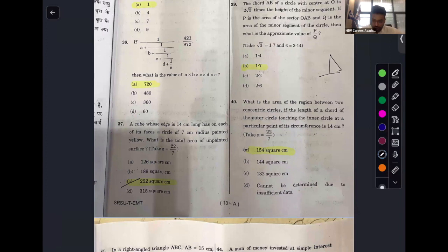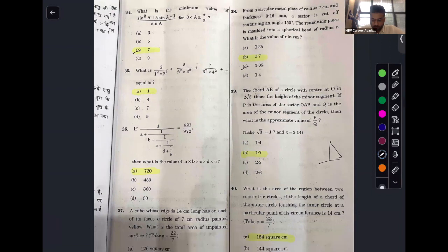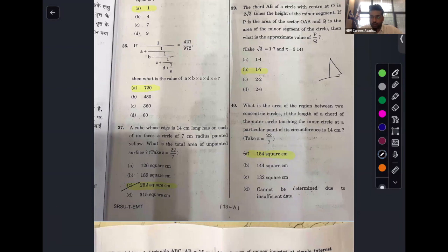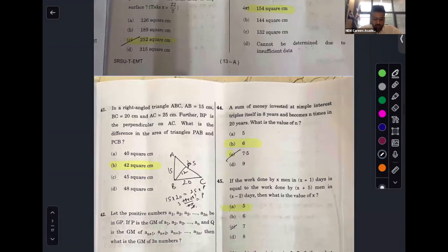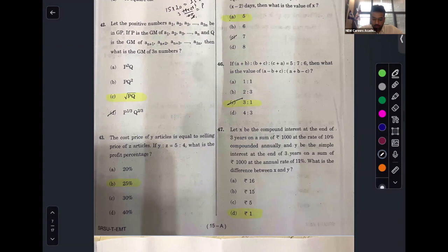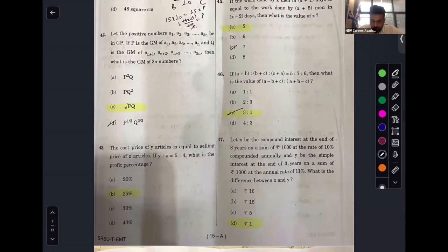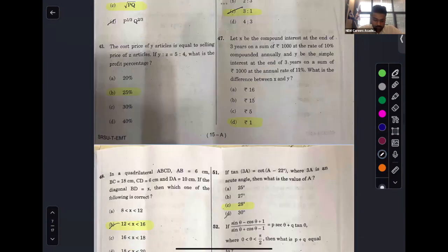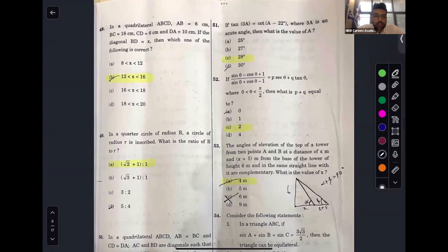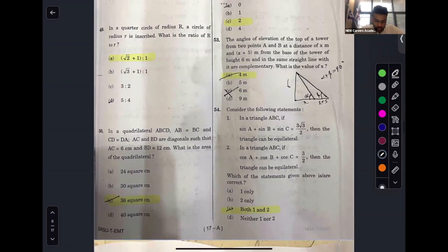37th answer is Charlie. 38th answer is bravo. 39th answer is bravo again. 40th answer is alpha. 41st answer is alpha. 42nd answer is Charlie. 43rd answer is bravo. 45th answer is alpha. 46th answer is Charlie. 47th answer is Charlie. In a quadrilateral, this answer is bravo. 49th answer is alpha. 50th answer is alpha.